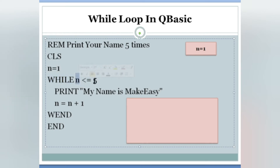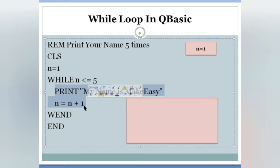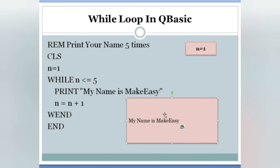While N less than or equals to five: N is one. Is one less than or equals to five? Condition true — yes, because one is less than five. When the condition is true, the body of the while loop will be executed. The body is everything after 'while' and before 'WEND'. What is written there: 'print my name is make easy' — so it will be printed in the output screen. First time printed.